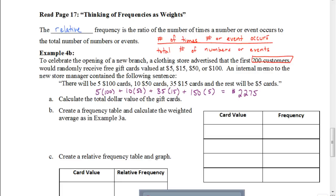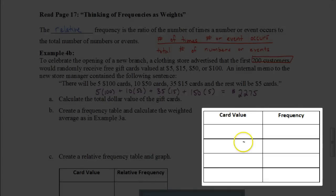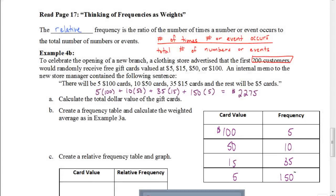Part B says create a frequency table and calculate the weighted average as in example 3A. We're going to do a weighted average just like we did before. Let's first start out with filling out this frequency table. So we have our first column where we're going to record our card values: $100, $50, $15, and $5 gift cards. And for the frequency, that's referring to how many times it's going to occur. The $100 gift card, there's five of those. The $50 gift card, there's 10 of those. The $15 gift card, there's 35 of them. And lastly, for the $5 gift card, there's 150 of those. So there's your frequency table.